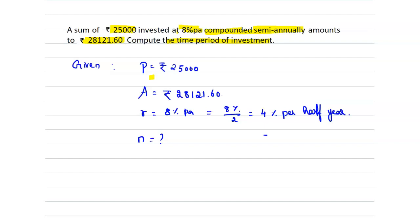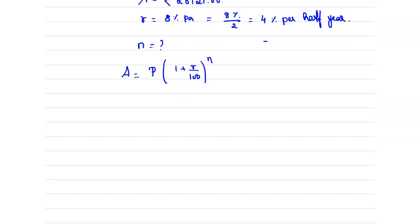Now consider the compound interest formula. The total amount equals P times (1 + R/100) to the power n. This is the formula. Now substitute all the values in this formula. So A is 28,121.60, which equals P is 25,000 multiplied by (1 + 4/100) to the power n.